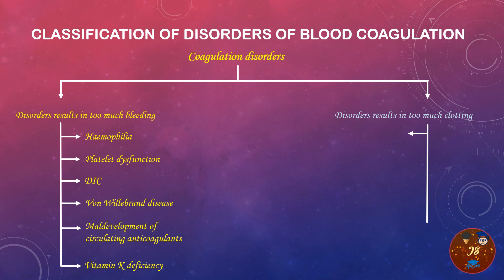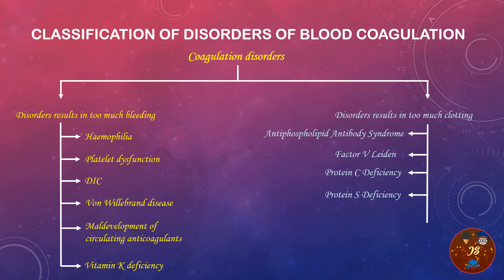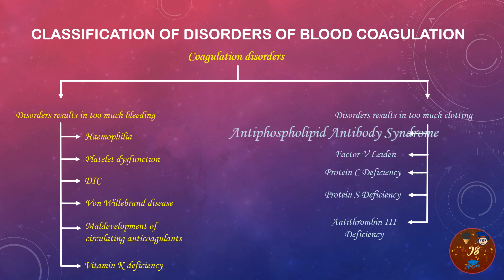Regarding disorders resulting in too much clotting, these include antiphospholipid antibody syndrome (APS), protein S deficiency, protein C deficiency, and antithrombin 3 deficiency. Our today's topic of discussion is antiphospholipid antibody syndrome.